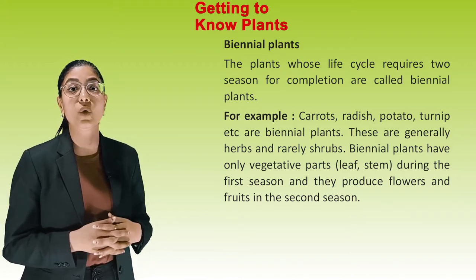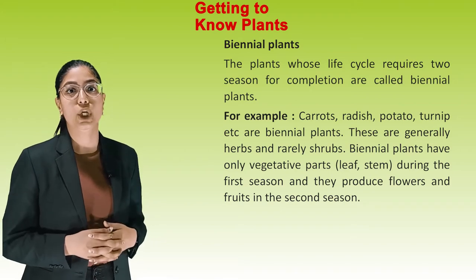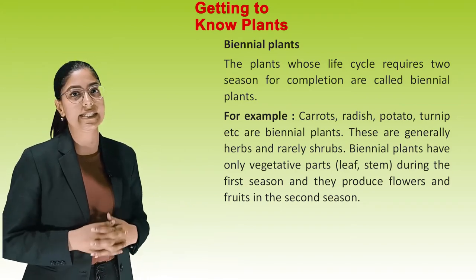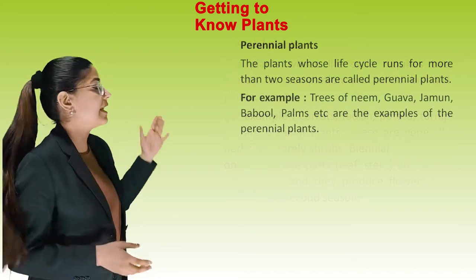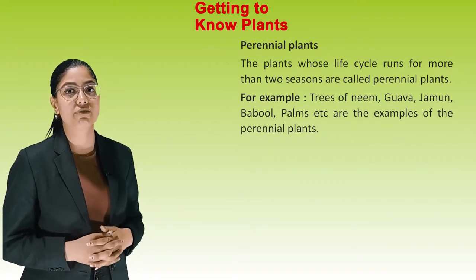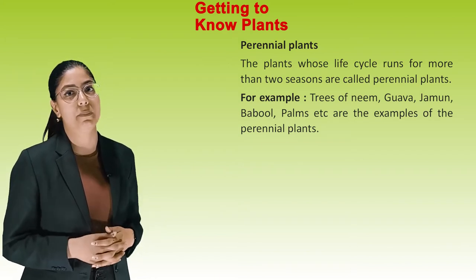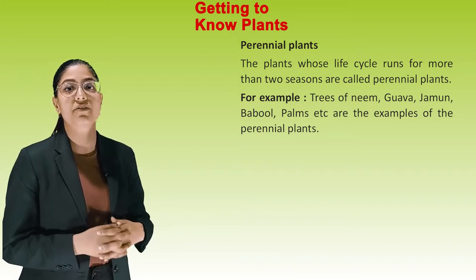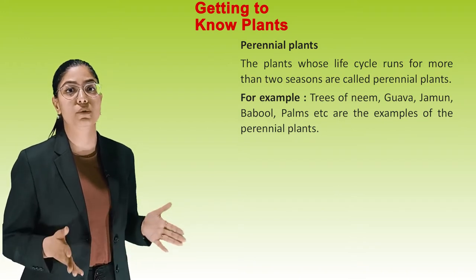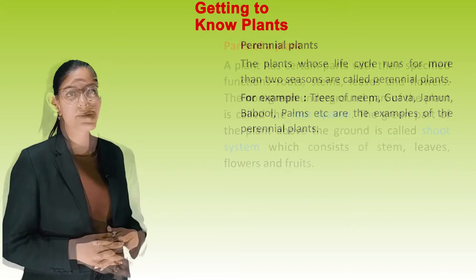Biennial Plants have only vegetative parts — leaf and stem — during the first season, and they produce flowers and fruits in the second season. Perennial Plants — plants whose life cycle runs for more than two seasons are called Perennial Plants. For example, Trees of Neem, Guava, Jamun, Babool, Palm etc. are examples of Perennial Plants.